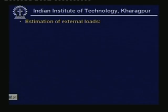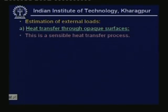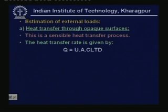Now let us look at estimation of external loads. First, heat transfer through opaque surfaces — all walls, roof, floor, doors, etc. The heat transfer rate through these opaque surfaces is sensible heat transfer only. It is given by Q = U × A × CLTD, where U is the overall heat transfer coefficient, A is the area, and CLTD is the cooling load temperature difference. For sunlit walls and roof, CLTD has to be obtained from CLTD tables, as discussed in the last lecture.